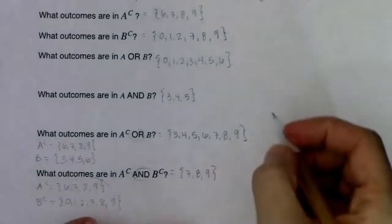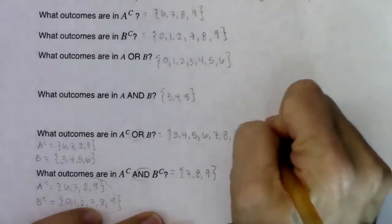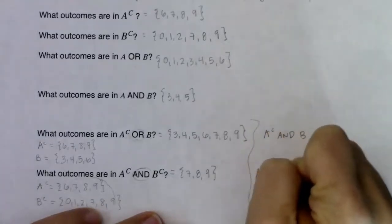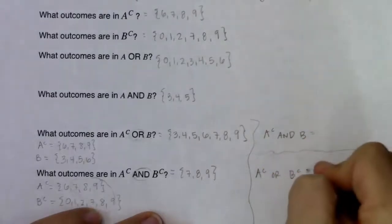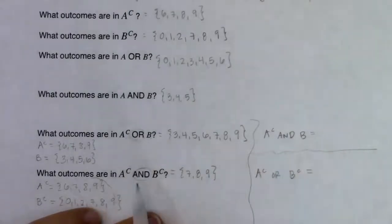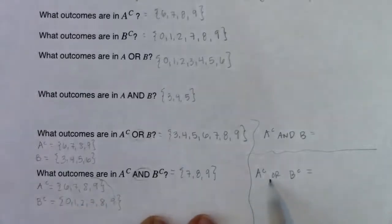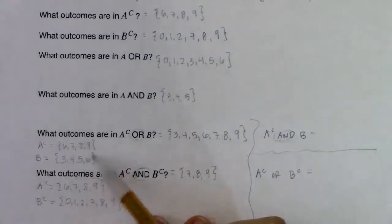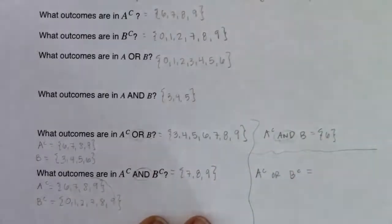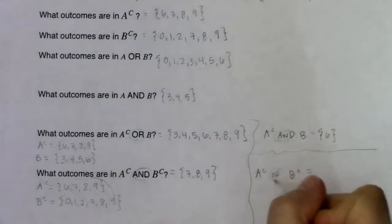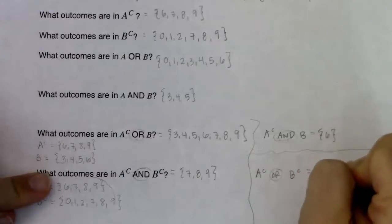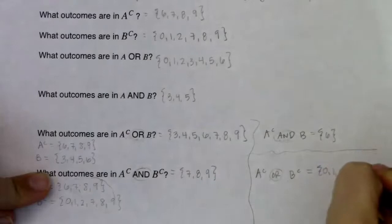Two more examples: A complement AND B — looking at A complement {6,7,8,9} and B {3,4,5,6} for overlap, only six appears in both, so the result is {6}. For A complement OR B complement — combining {6,7,8,9} and {0,1,2,7,8,9} into one list, ignoring repeats: {0, 1, 2, 6, 7, 8, 9}.